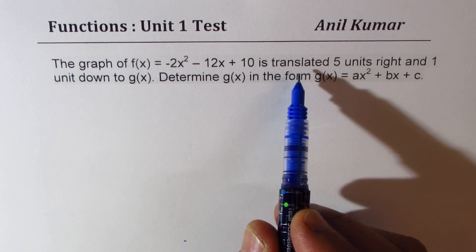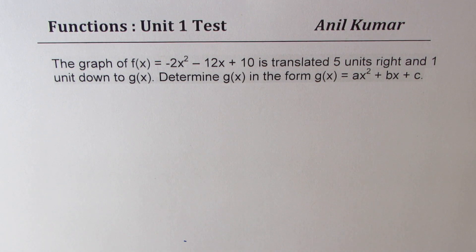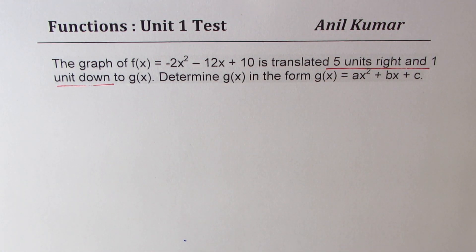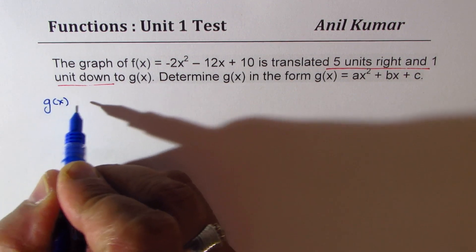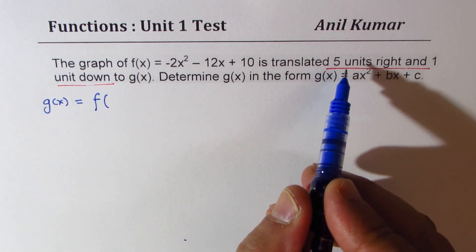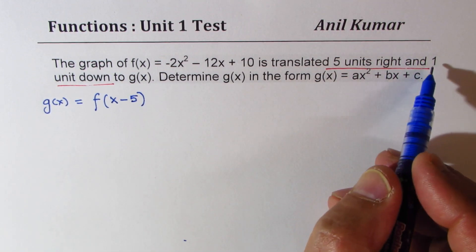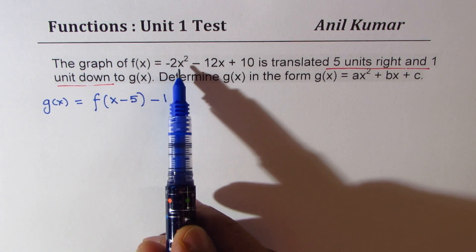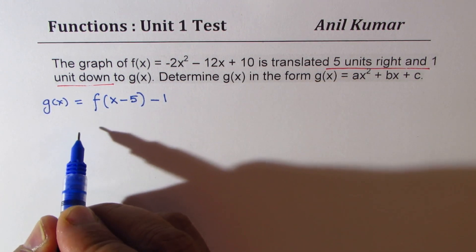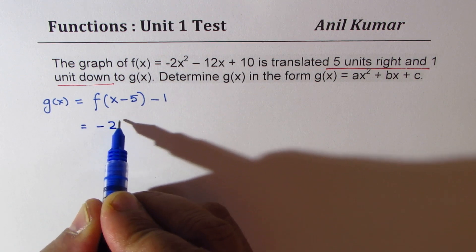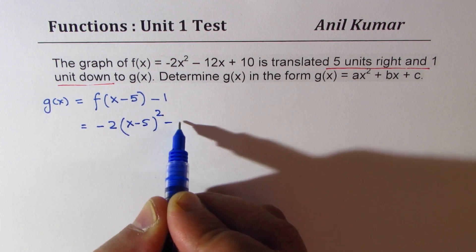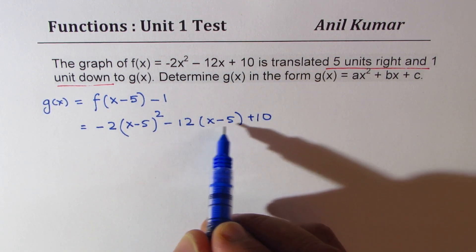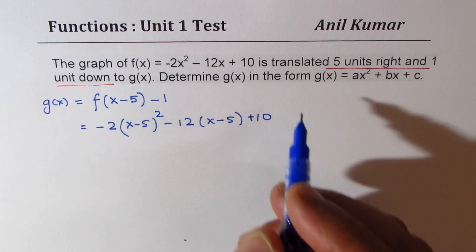I'll adopt a straightforward method to solve this question. The transformation is 5 units right and 1 unit down, which means g(x) = f(x - 5) - 1. Five units right means x is replaced by (x - 5), and 1 unit down means minus 1. So we directly substitute x with (x - 5) and subtract 1, giving us: -2(x - 5)² - 12(x - 5) + 10 - 1.